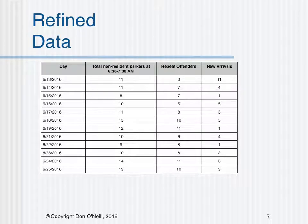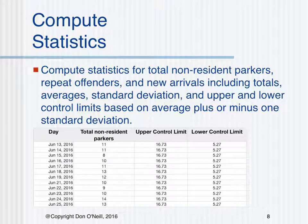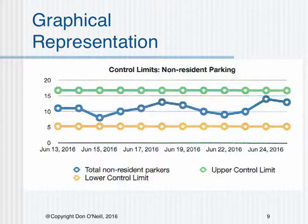Here is the raw data summarized and presented as refined data. Compute statistics for total non-resident parkers, repeat offenders, and new arrivals, including totals, averages, standard deviation, and upper and lower control limits, based on the average plus or minus one standard deviation, and do this for a week or two. Here is the total non-resident parkers and a computed upper and lower control limit shown graphically. The upper control limit equals the average plus one standard deviation; the lower control limit equals the average minus one standard deviation.